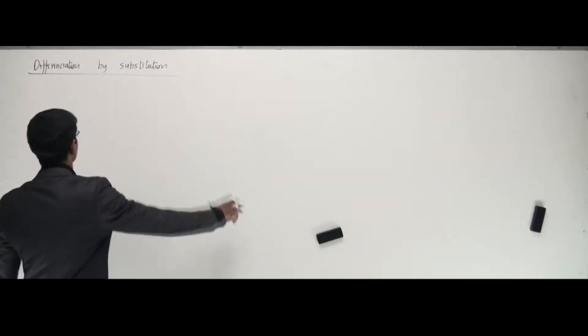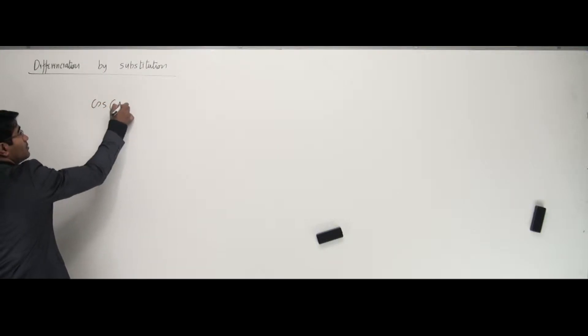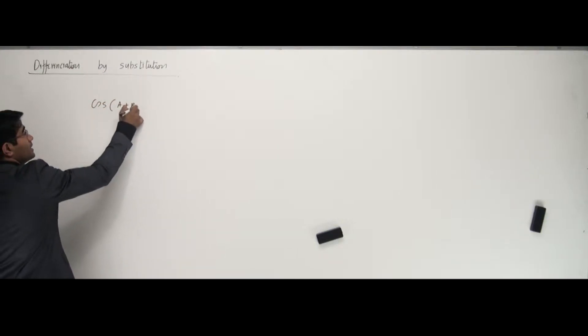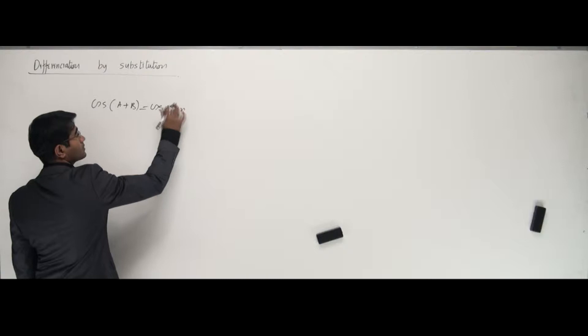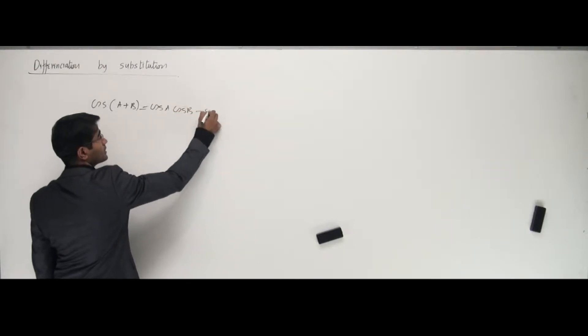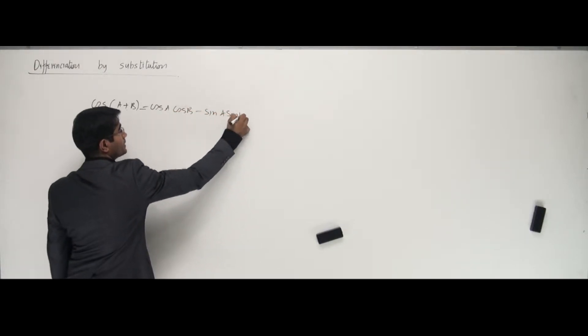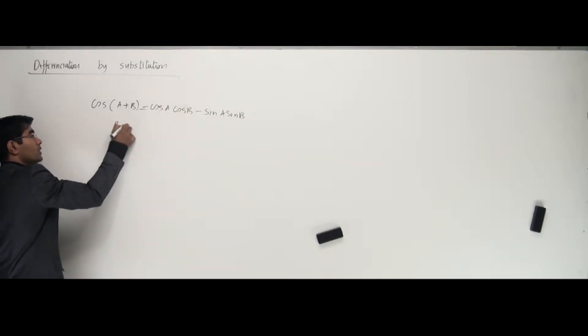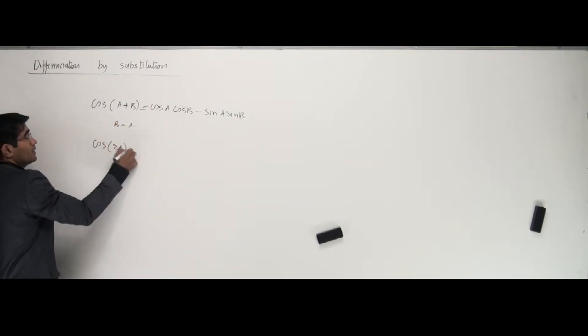Alright guys, the next formula we need is cos 2t. The formula goes like cos of a plus b, which is cos a cos b minus sin a sin b. Now if I change b to a, I get cos of a plus a, that is cos 2a.